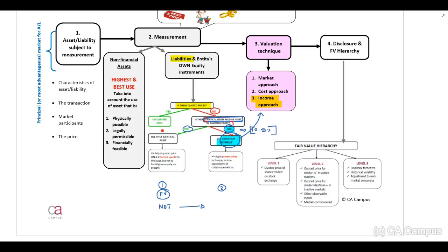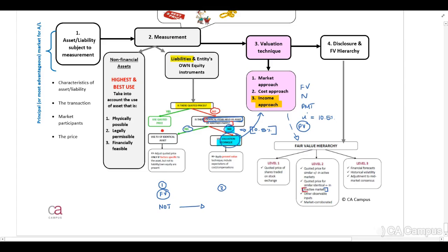Why the income approach? They provide us with a future value, a period, we can calculate our payments, and we know that our rate is now 10.5%. Therefore, we are able to calculate our present value. The next question is how do we disclose this — level 1, level 2, or level 3? This is an inactive market, as there is no active market available. Therefore, for similar or identical items with a little bit of observable information (the 10.5%), we will disclose this as a level 2 hierarchy.